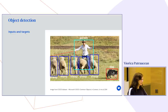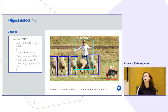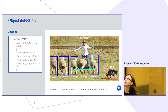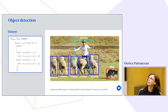To train such a system, we need a dataset with training and testing samples. Each sample contains an RGB image and a list of objects — different images can have different numbers of objects. For each object, we have the label as a one-hot encoding and the bounding box with four coordinates.